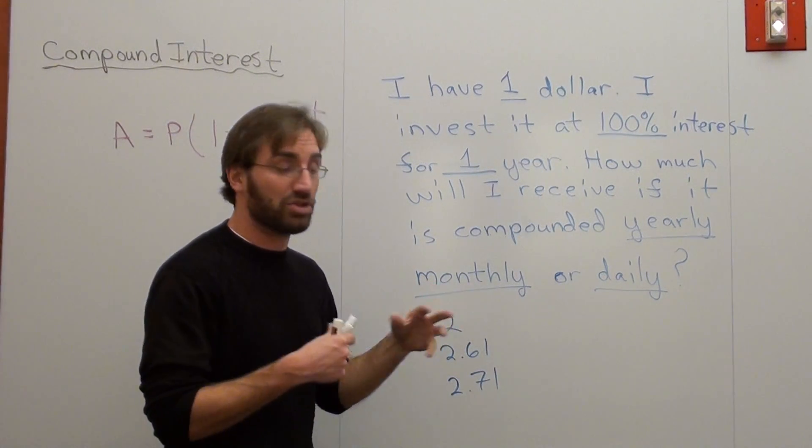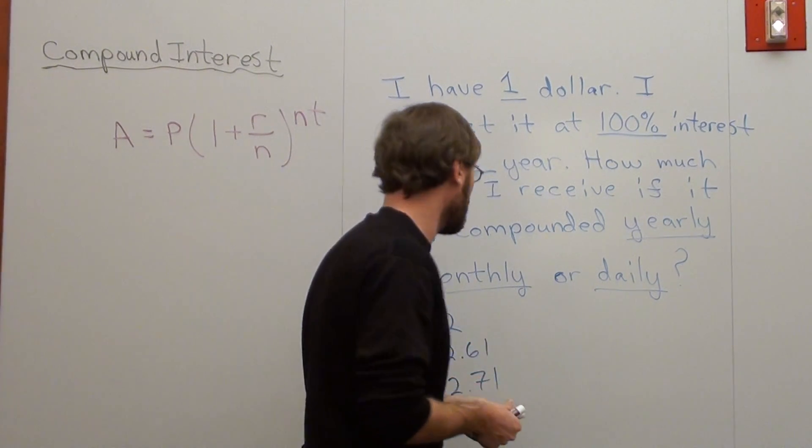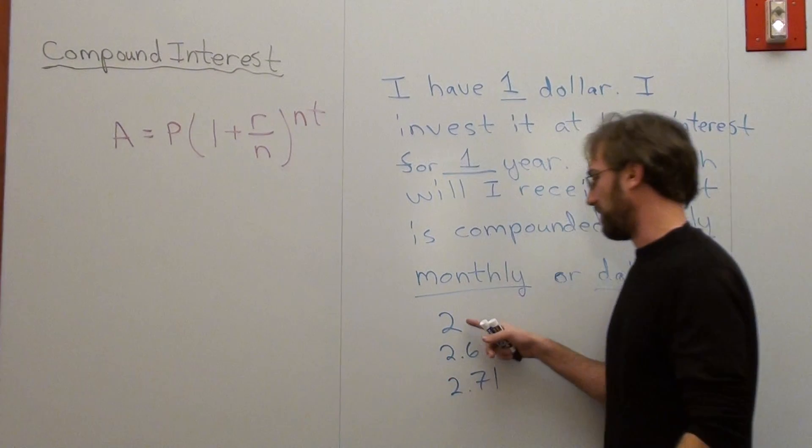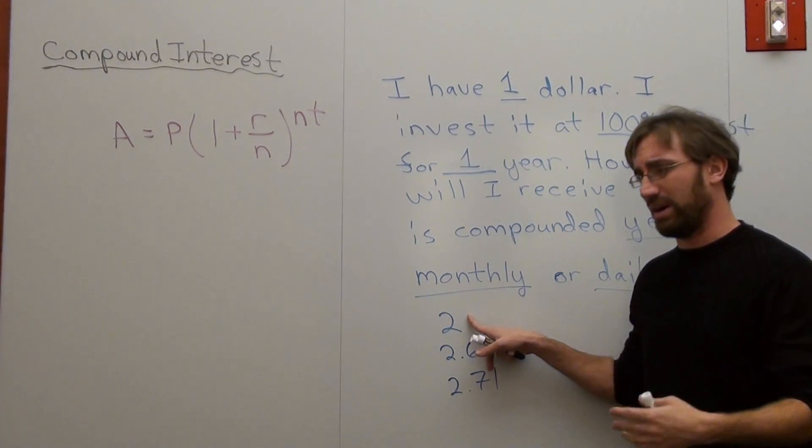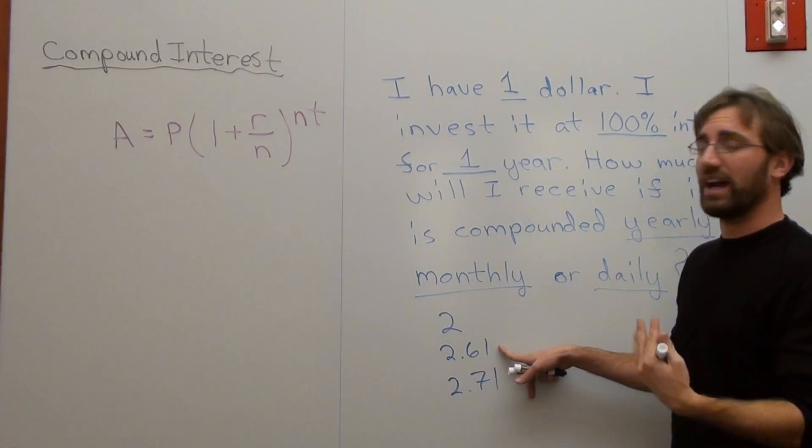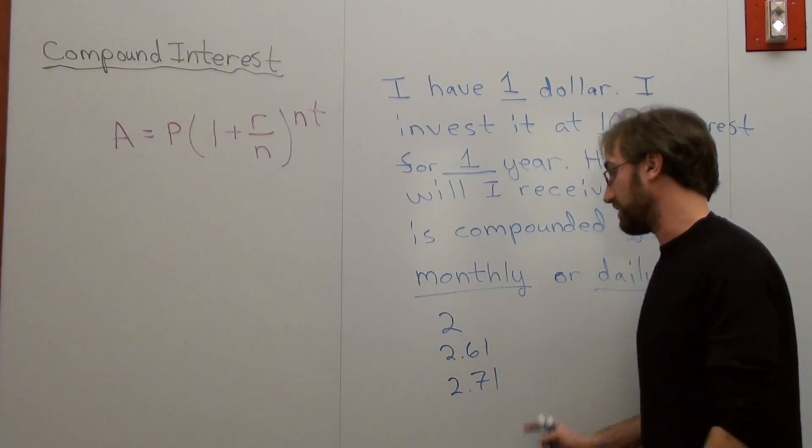And the example, the numbers, the answers vary a little bit. So let me go ahead and show you really quickly. These are the answers, by the way: 2 if I compound it yearly, 2.61 if I compound it monthly, and 2.71 if I compound it daily.